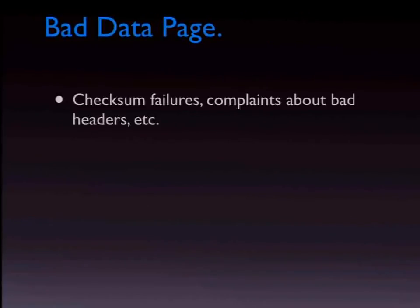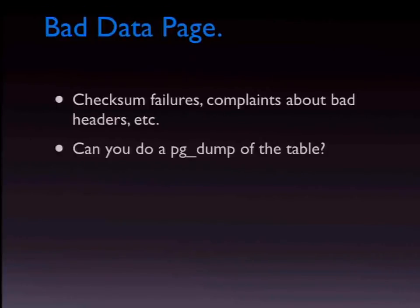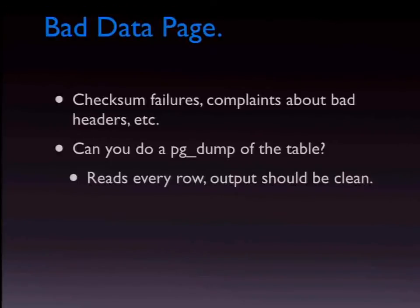For bad data pages, you see errors in the log. Read those text logs — run them through PG Badger and look at the summaries. There's nothing worse than realizing that for the last five months Postgres has been complaining about a corrupt data page and you didn't know about it. Can you do a pg_dump of just that one table without errors? Because it reads every row of the main data (not the indexes), so the output should be clean.